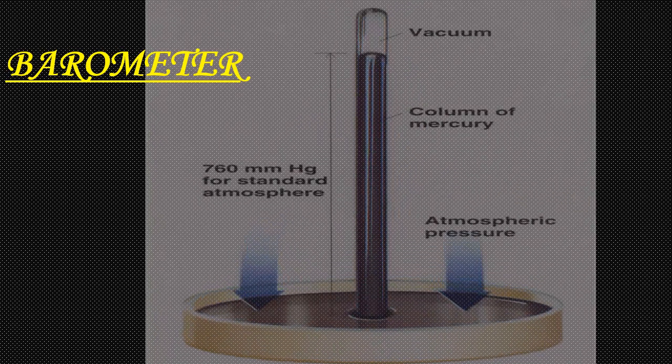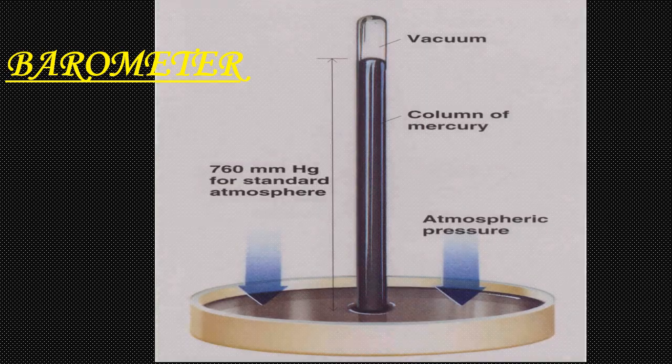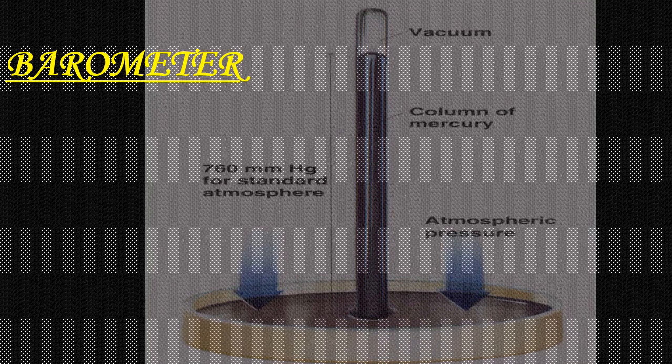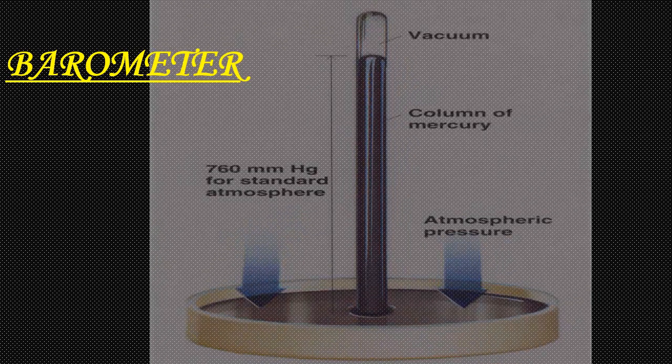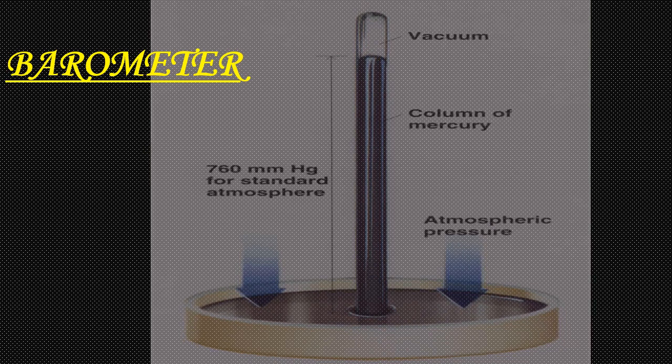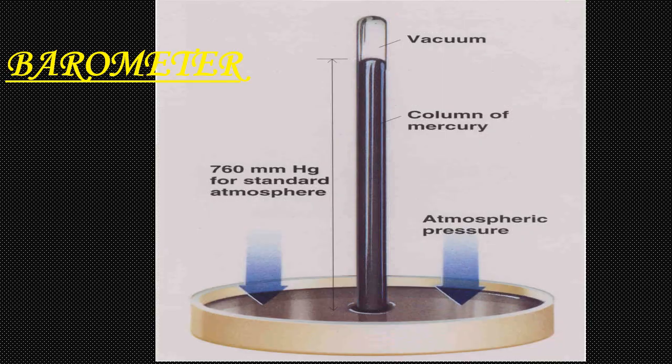It is found that at the sea level, the vertical height of mercury supported in the tube is 76 cm above the surface of mercury in the bowl. If we have made this simple barometer at sea level, then mercury's height is 76 cm, and this height is measured above the mercury surface in the bowl.